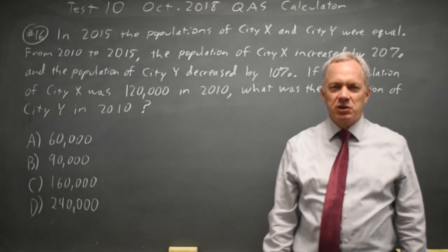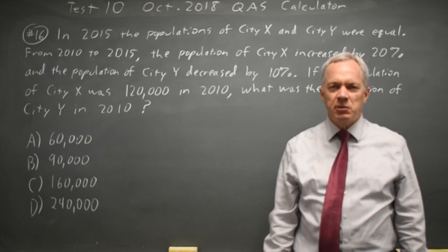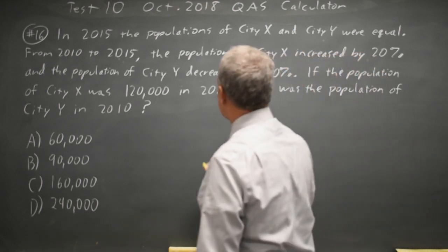This is question 16. College Board gives us a word problem where we have to take a percent and then another percent and make sure we take the percents of the right number and in the right direction. So let's make a table here.